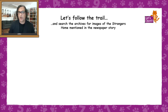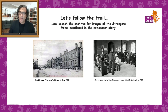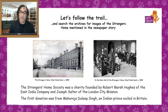Let's follow the trail and search the archives for images of the Stranger's Home mentioned in that newspaper report. Here's a picture of the very large Stranger's Home in Limehouse, on West India Dock Road. Here's also a picture of its main hall in 1902, showing people from all over the world — all over the British Empire. The Stranger's Home Society was a charity founded by Robert Marsh Hughes of the East India Company and Joseph Slater of the London City Mission. The first donation came from Maharaja Dr Duleep Singh, an Indian prince who was exiled in Britain.